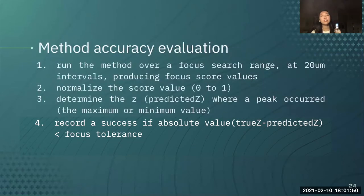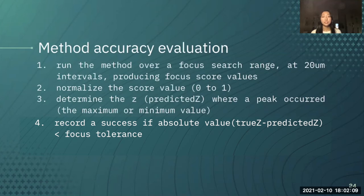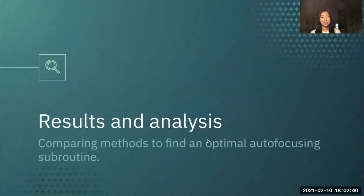To evaluate the accuracy of these methods, we had a few simple steps. First, we ran the method over a focused search range at 20 micrometer intervals, producing focus score values. We normalized the score value to range from 0 to 1. We determined the predicted Z to be where a peak occurred — the minimum or maximum value depending on what that specific metric was looking for. We said a method was successful if it was able to get the predicted Z within some tolerance of the true Z. Here are the results and analysis.